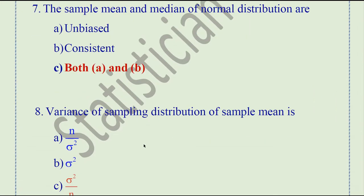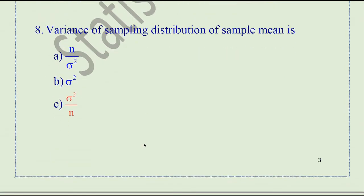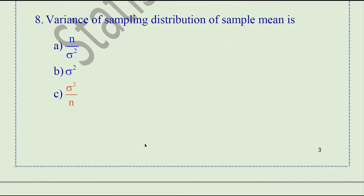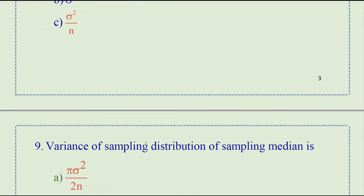Question number 7. The sample mean and median of normal distributions are both unbiased and consistent. The variance of the sampling distribution of the sample mean is sigma square over n.